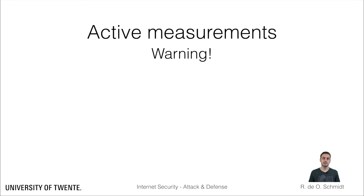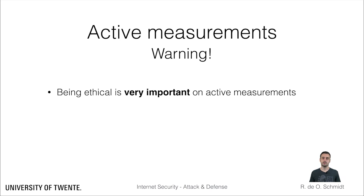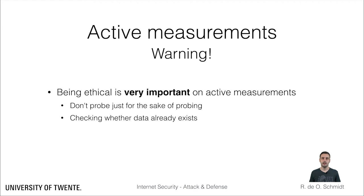Note that there are several ethical issues involved in active measurements. It is important to probe politely, being careful not to abuse someone else's system. It is also important to check beforehand whether other initiatives already have produced data you are interested in. There are many places to search for measurement data, such as the datasets openly shared by RIPE Atlas, CAIDA, ISI through the Internet Census project, and many others.